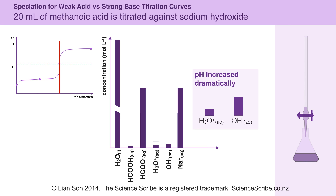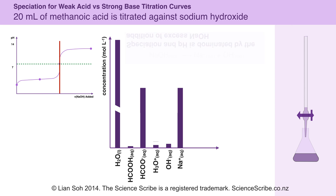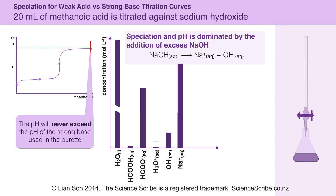As for why this part of the titration curve is so steep, it's because we are no longer in the buffer region. At one pH unit above and below the buffer point, we have an area called the buffer region — a mixture of the original weak acid and its conjugate base. Buffer solutions are able to resist changes in pH. As we continue adding sodium hydroxide, the contents in the flask becomes dominated by sodium hydroxide and the pH becomes dominated by the hydroxide ions being added. Regardless of how much sodium hydroxide is added, the pH should never exceed the pH of the sodium hydroxide in the burette.